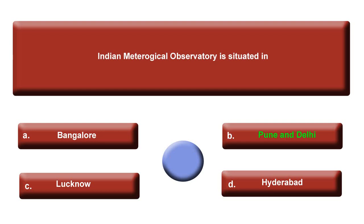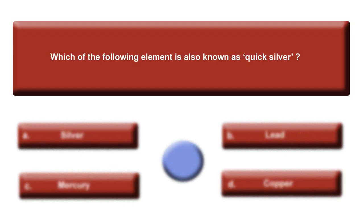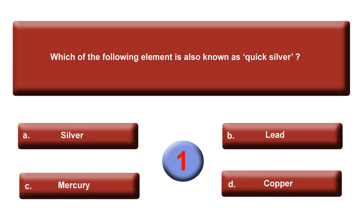The next question is: Which of the following element is also known as quicksilver? Option A: Silver. Option B: Lead. Option C: Mercury. Option D: Copper. Your time is up. The answer is C, Mercury.